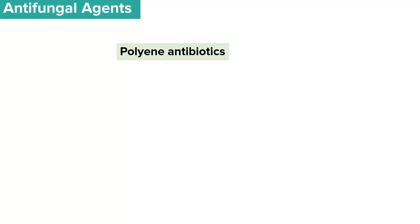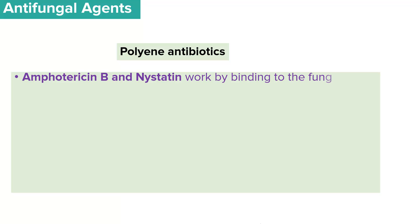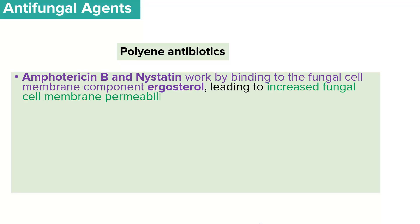The first class of antifungal agents we're going to start with is the polyene antibiotics. We have two examples: amphotericin B and nystatin. Amphotericin B and nystatin work by binding to the fungal cell membrane component known as ergosterol. This leads to an increased fungal cell membrane permeability, and therefore there is a loss of intracellular constituents by development of amphotericin B-associated pores in the cell membrane.